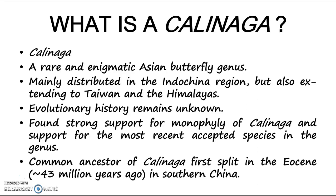So what is a Callinaga? A Callinaga is a rare and enigmatic Asian butterfly genus. This butterfly is mainly distributed in the Indochina region, but also extending to Taiwan and the Himalayas.